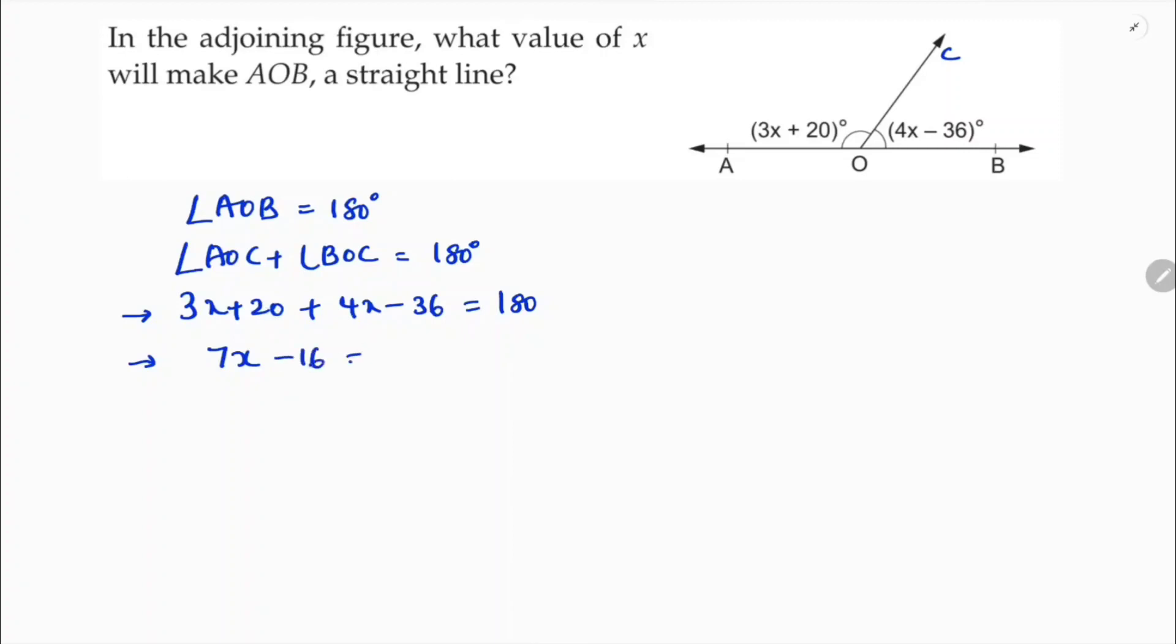3x plus 4x equals 7x, and 20 minus 36 is minus 16 equals 180. So 7x equals 180 plus 16, which is 196. Therefore, the value of x is 196 divided by 7.